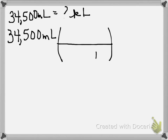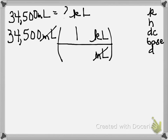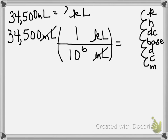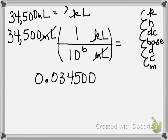Milliliters are in the numerator, so now they have to go in the denominator. Kiloliters go on the top. A kiloliter is larger. Counting down: 1, 2, 3, 4, 5, 6 — 10 to the 6th. I'm going to take 34,500 and divide it by 10 to the 6th, which means I move the decimal to the left 6 times. Our answer is 0.034500 kiloliters.